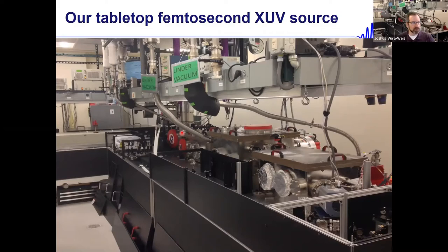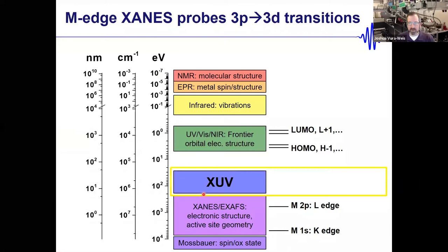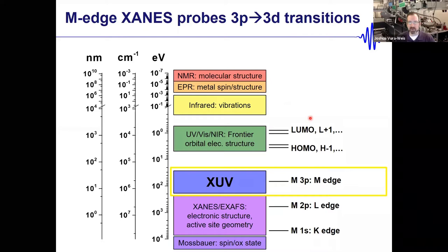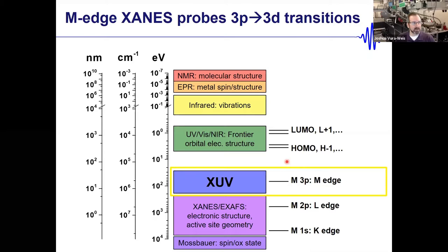This source operates in the extreme ultraviolet energy range — tens to hundreds of electron volts. We use it as a probe of 3p-to-valence transitions, and we're trying to understand the information content of this spectral region and how it complements higher-energy X-ray probes. I'll call these very soft X-rays throughout the talk, because the experimental intuition from L-edge spectroscopy transfers well into this energy range.